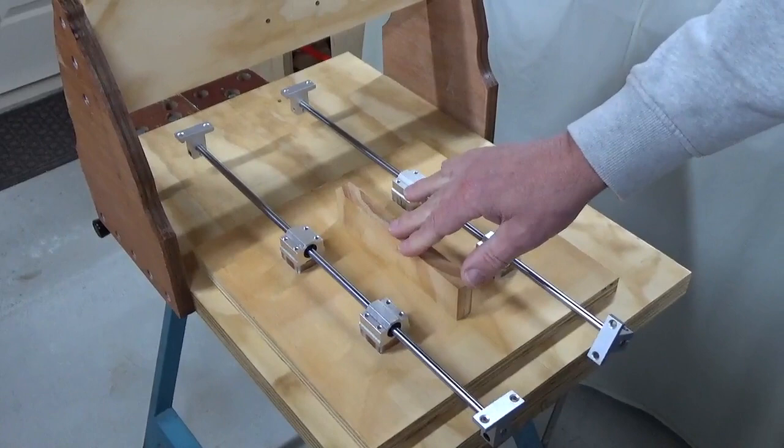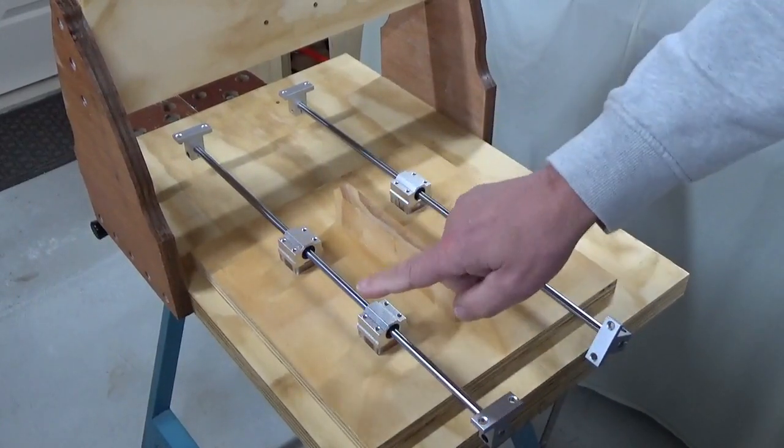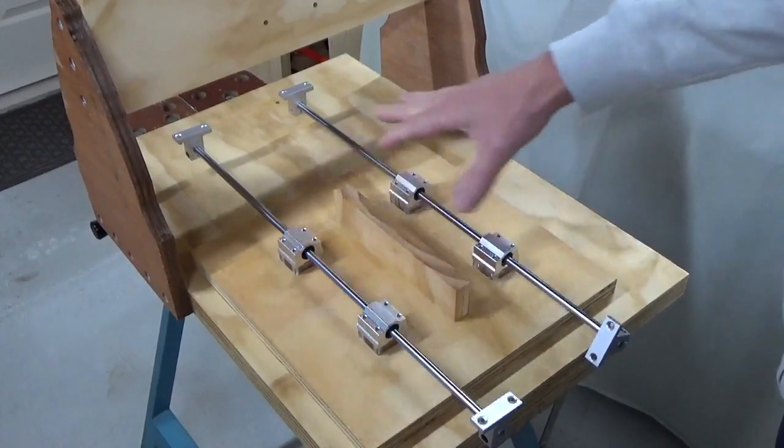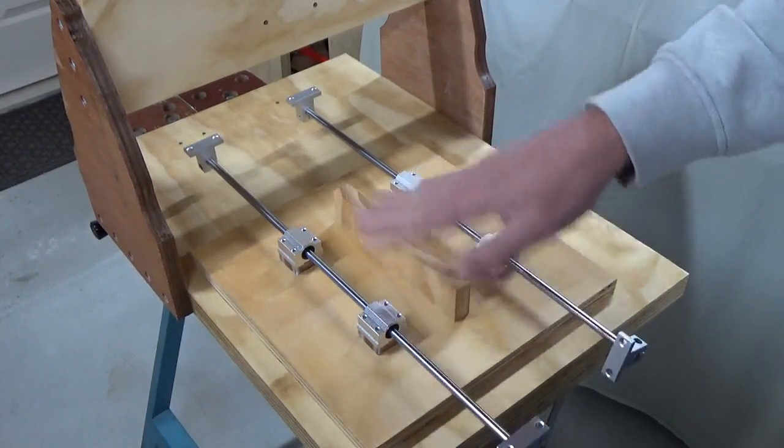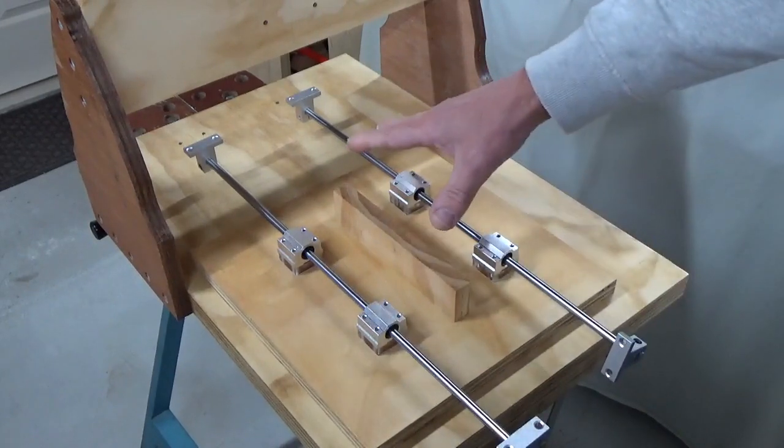We've got the bottom of the slide table and you can see the bearing supports for the rail system which moves backwards and forwards. We'll now turn that over in a second.